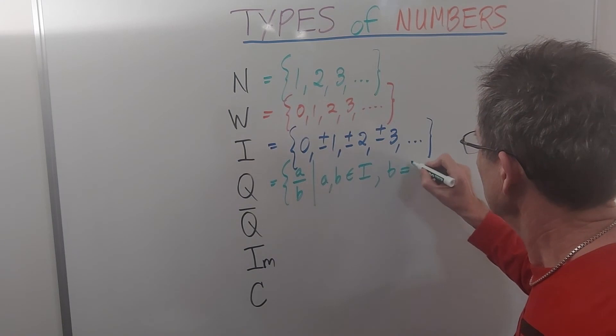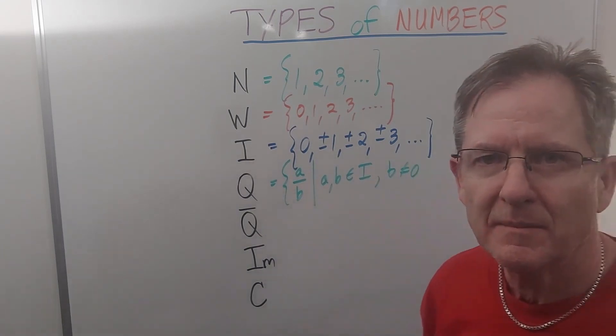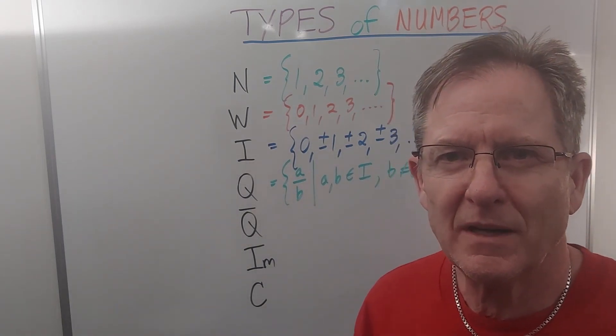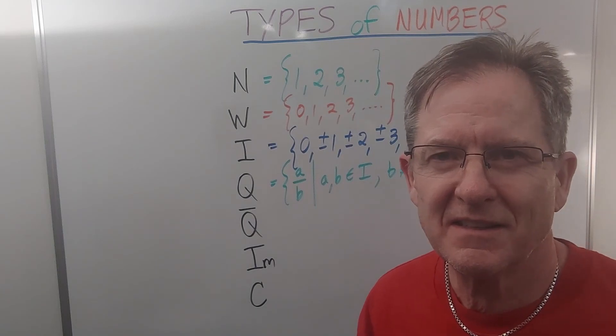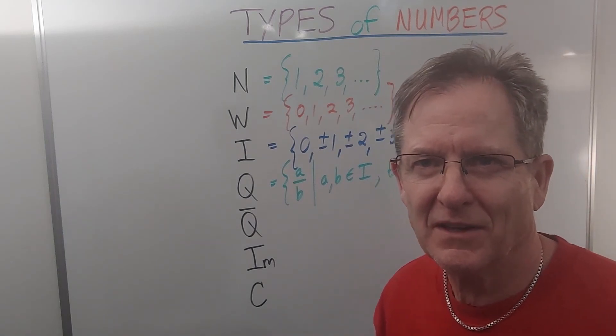And of course, b cannot be 0, because if you can divide by 0, you can prove 1 equals 2, and all sorts of other things, as I did in one of my most famous videos.